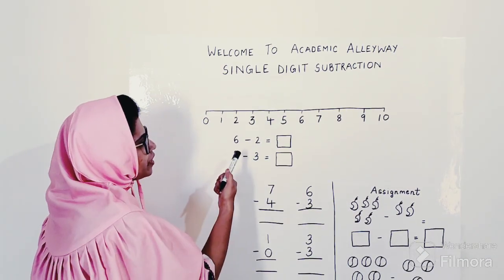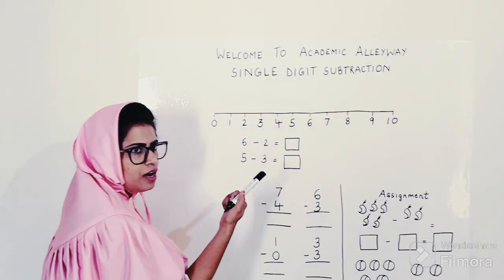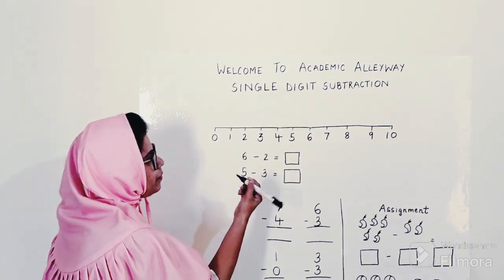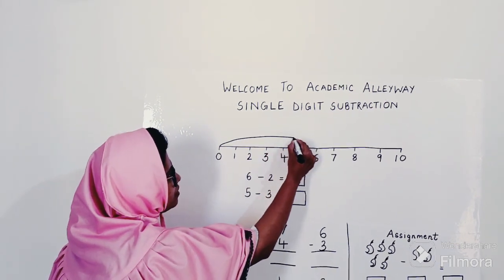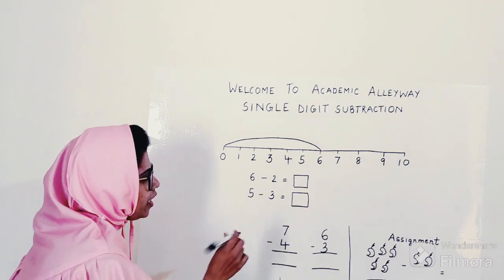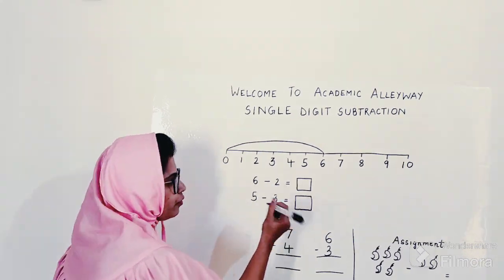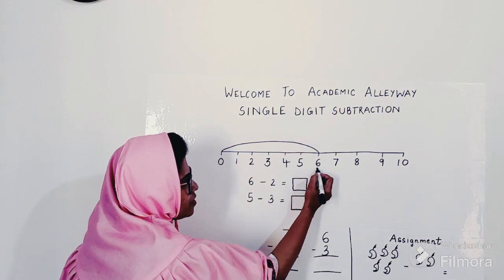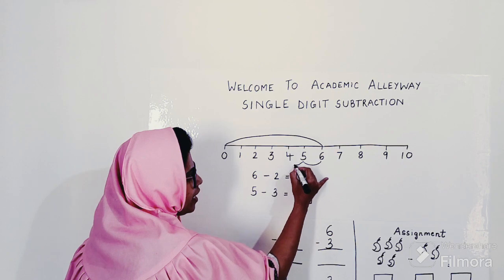First, draw the number line from 0 to 10. My sum over here is 6 minus 2. How will you do it? Do this on the number line: start from 0, go up till 6, stop. Now minus 2—my other number is 2. So start from 6 because you have stopped at 6: 1 and 2.